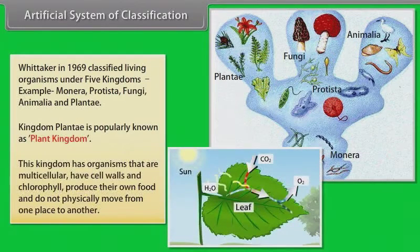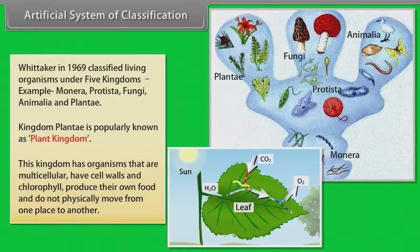Kingdom Plantae is popularly known as Plant Kingdom. This kingdom has organisms that are multicellular, have cell walls, and chlorophyll. Produce their own food, and do not physically move from one place to another.